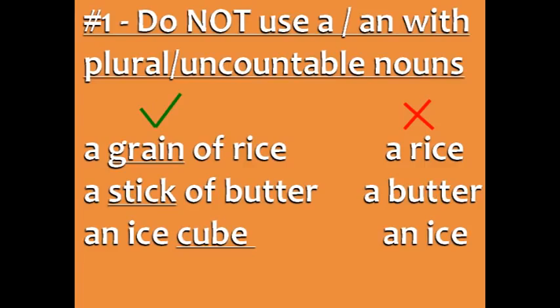Rice, butter, and ice are also uncountable, so you can't use the word 'a,' but you can say 'a grain of rice,' 'a stick of butter,' and 'an ice cube.'